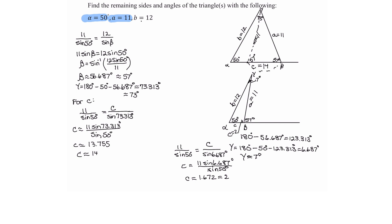That is how you use the information in the ambiguous case: an acute angle with the opposite side shorter than the adjacent side, long enough to reach and long enough to reach past just touching — and that's why we get two triangles.